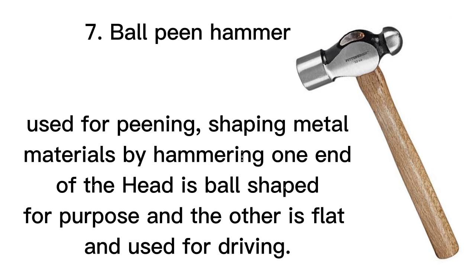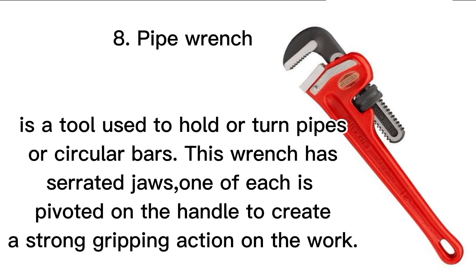7. Ball peen hammer: Used for peening and shaping metal. 8. Pipe wrench: Is a tool used to hold or turn pipes or circular bars. This wrench has serrated jaws, one of which is pivoted on the handle to create a strong gripping action on the work.